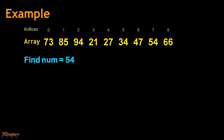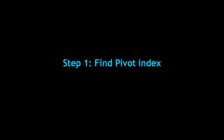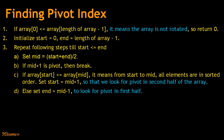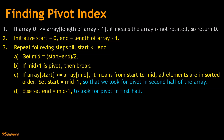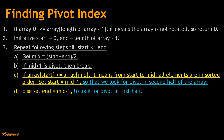Let us visualize the algorithm through animation. Consider a sorted rotated array; we want to find number 54. The first step is to find the pivot index. The algorithm is: if array[0] is less than or equal to array[length–1], the array is not rotated, so return 0. Otherwise, initialize start = 0 and end = length – 1. Repeat until start ≤ end: set mid = (start + end) / 2. If mid+1 is the pivot, break. If array[start] ≤ array[mid], the left half is sorted, so set start = mid + 1 to look for the pivot in the second half. Else, set end = mid – 1 to look in the first half.